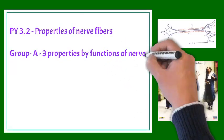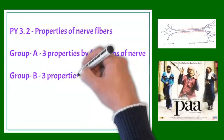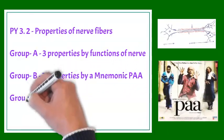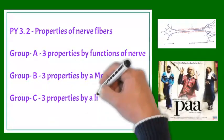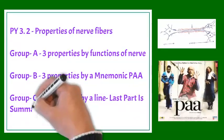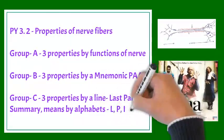And from each group we will derive three properties. From Group A, three properties we will derive by basic function of nerve or neuron. In Group B, three properties we will derive by a mnemonic PAA. And in Group C, three properties we will derive by a small line, that is last part is summary, should be summary in fact, means by these alphabets: L, P, I, N, S.